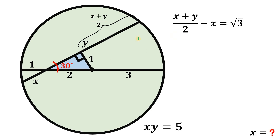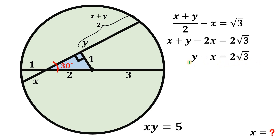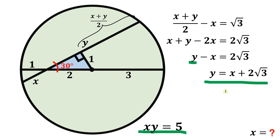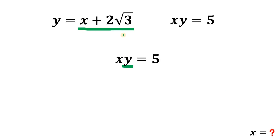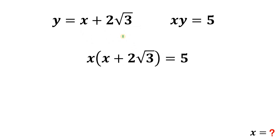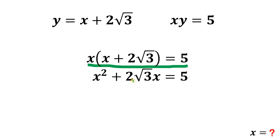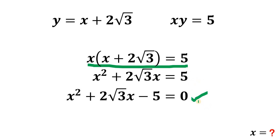To eliminate the 2 in the denominator, let's multiply all terms by 2. So we have X plus Y minus 2X equals 2 times root of 3. Combining like terms, we have Y minus X equals 2 times root of 3. Solving for Y in terms of X: Y equals X plus 2 times root of 3. Using these two results, we have two equations in terms of X and Y, so we can now solve for the value of X. Taking the equation XY equals 5 and replacing Y with its equivalent, X plus 2 times root of 3, we now need to solve this quadratic equation. Distributing X: X squared plus 2 times root of 3 times X equals 5. Rearranging, we have a quadratic equation in terms of X.